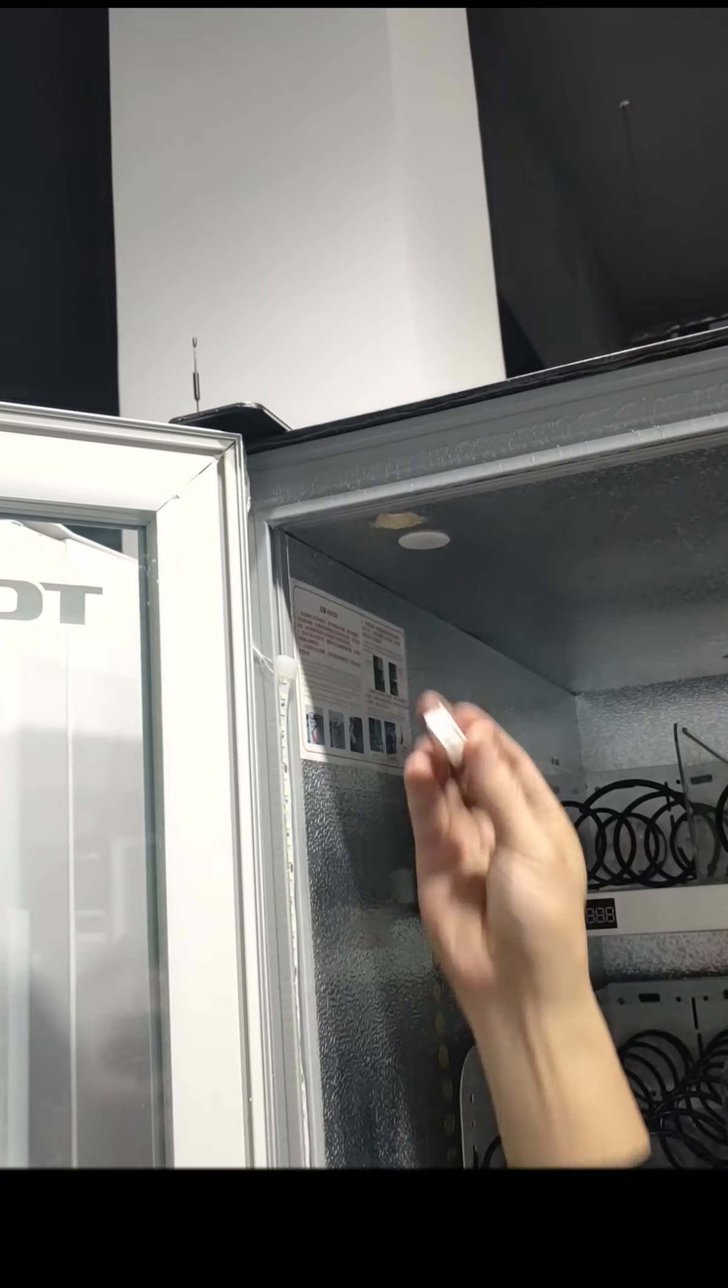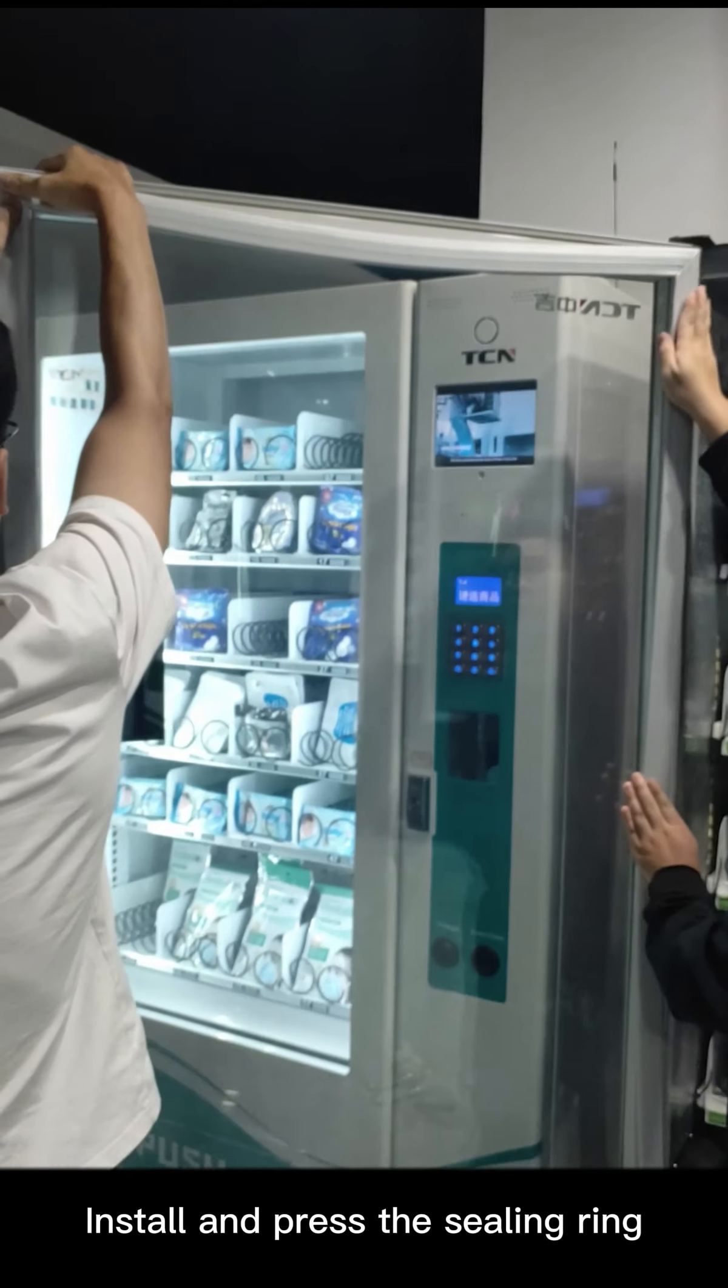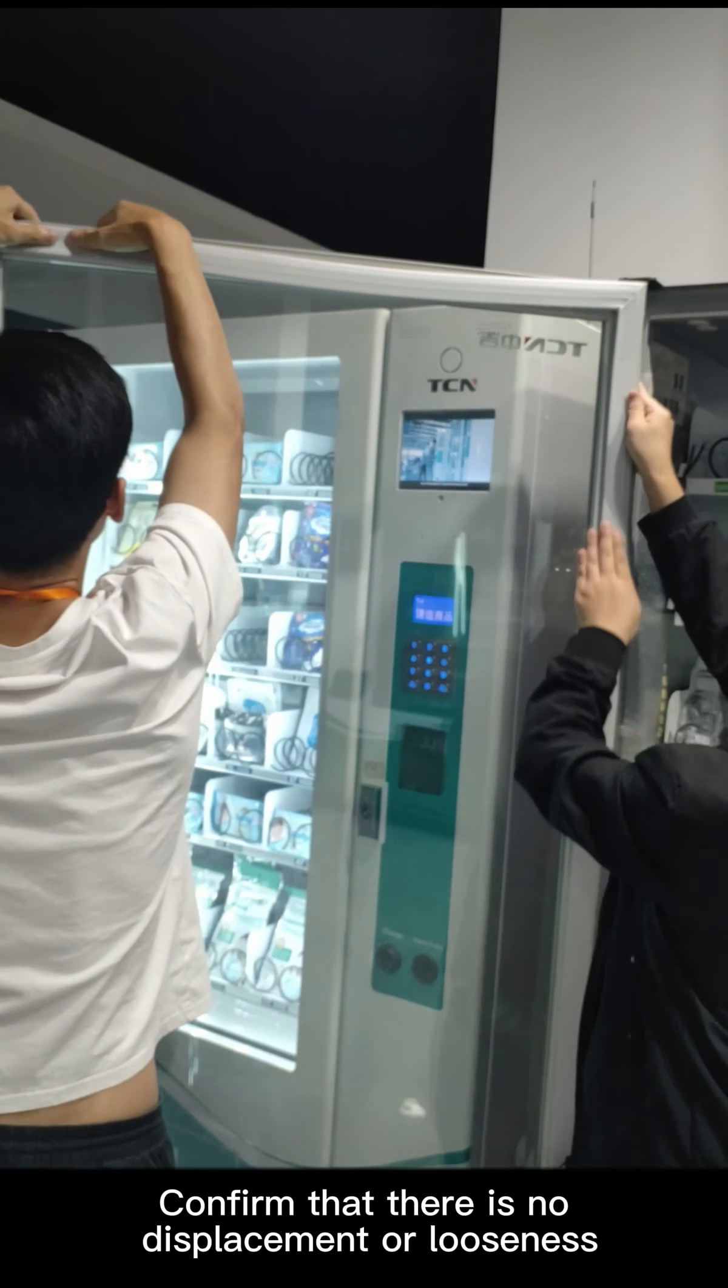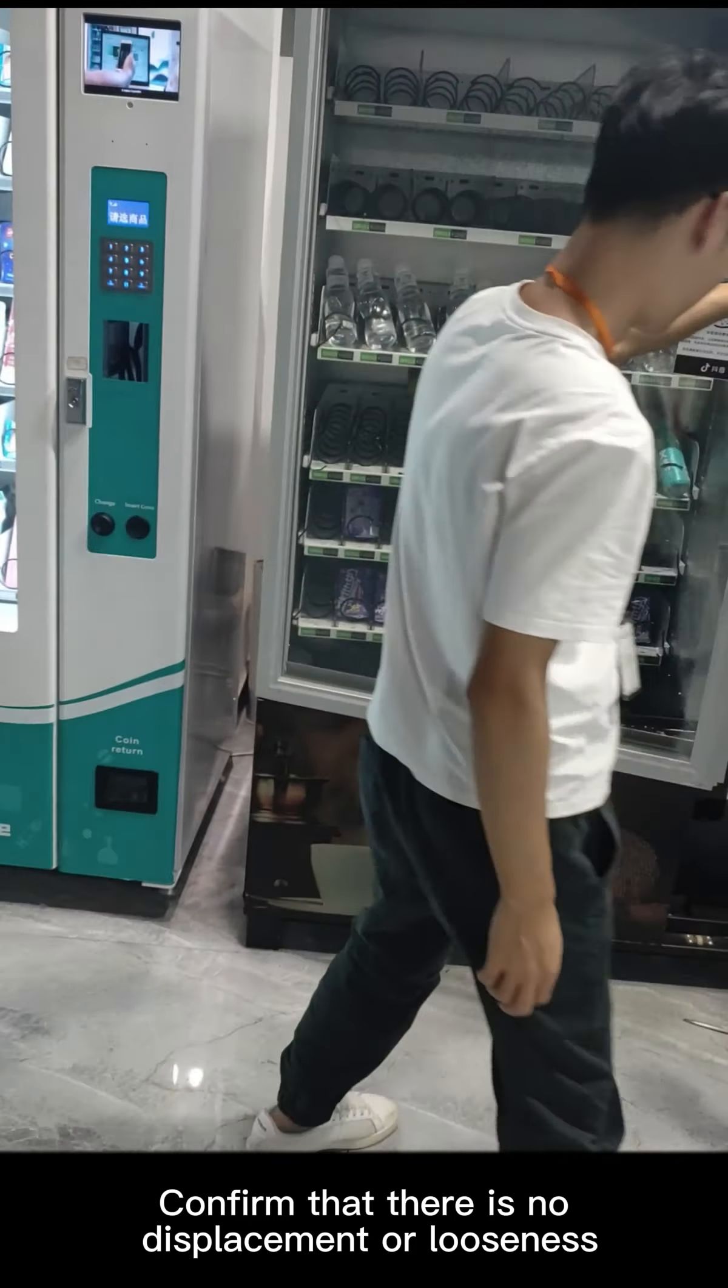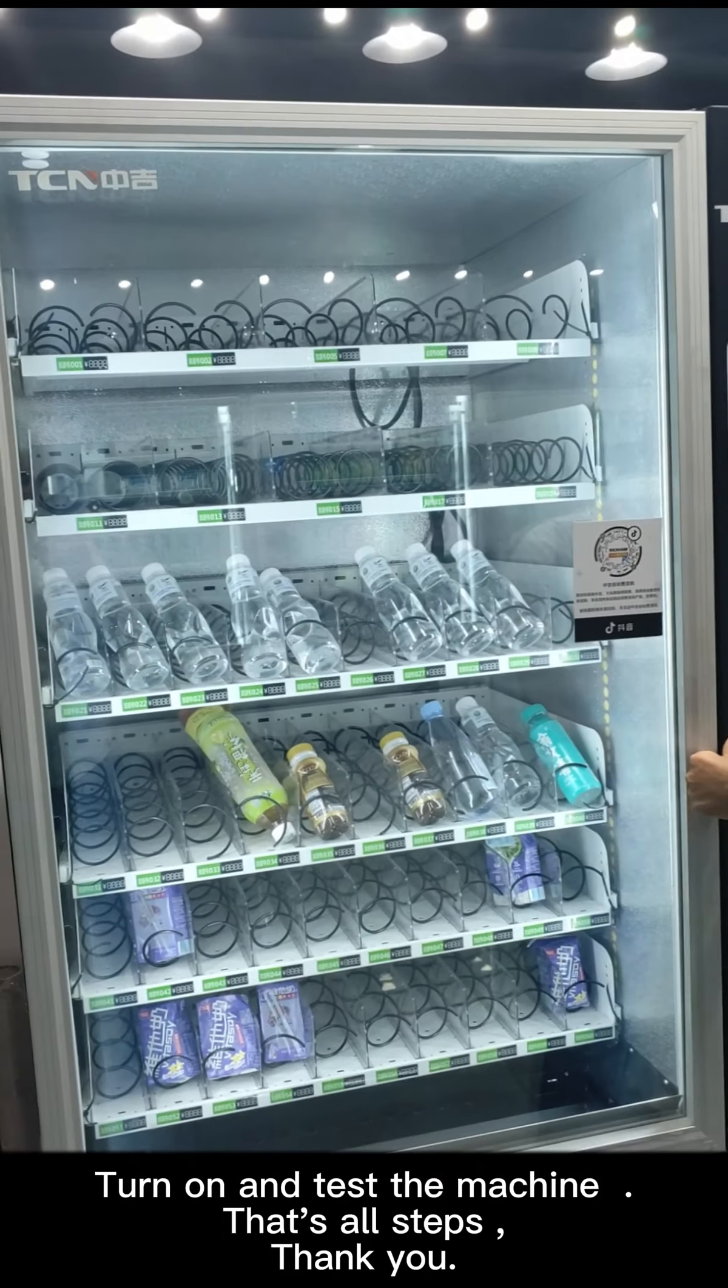Install and press the sealing ring. Confirm that there is no displacement or looseness and close the glass door. Turn on and test the machine. That's all steps. Thank you.